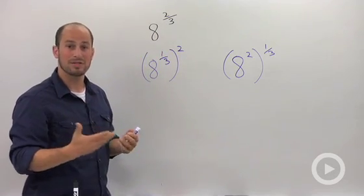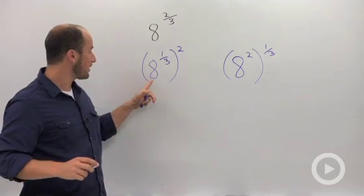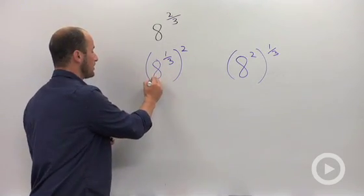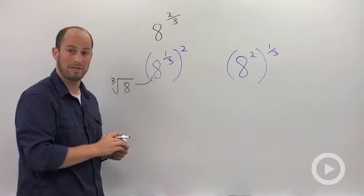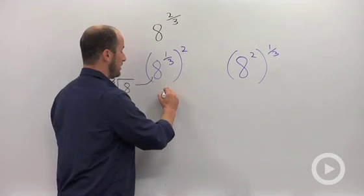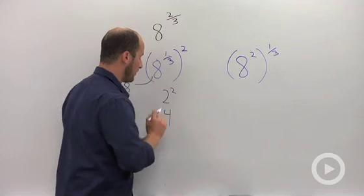Order of operations always tells us to start inside the parentheses and work out. So what we're concerned with here is the 8 to the 1/3. If you remember what that means, this is really just the cube root of 8. Cube root of 8 is just 2, so what we have here is 2 squared, which is 4.